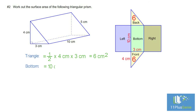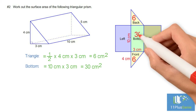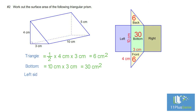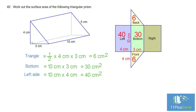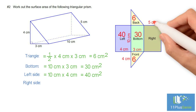The bottom is a rectangle. The area equals 10 centimeters times three centimeters, which equals 30 centimeters squared. The left side is a rectangle: area equals 10 centimeters times four centimeters, which equals 40 centimeters squared.